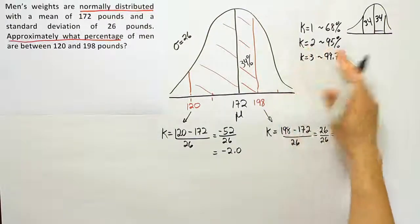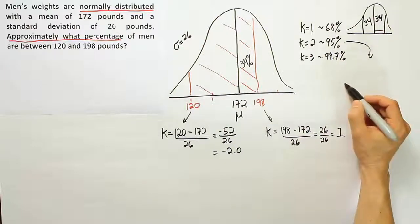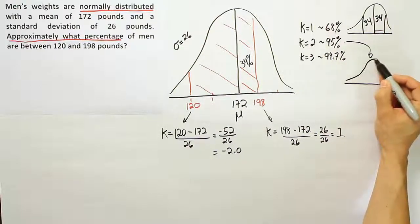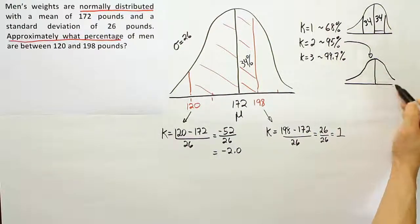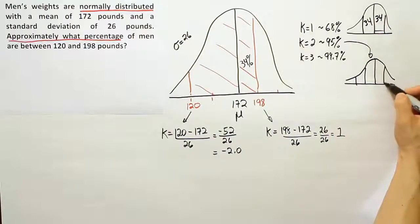The important thing about that is that the curve is also symmetric, and when k is 2, it captures 95 percent. That's between two standard deviations of the mean - two standard deviations from the mean.